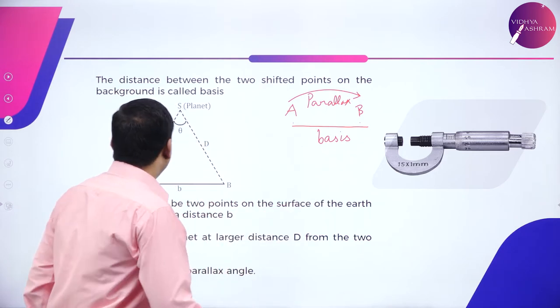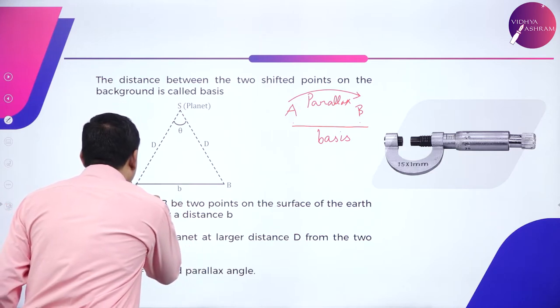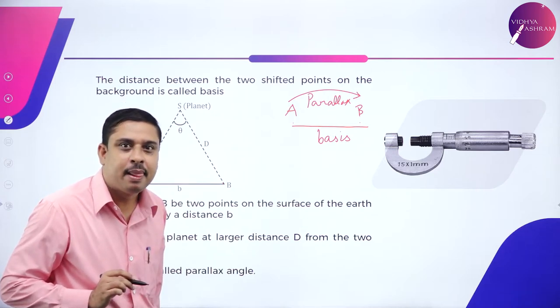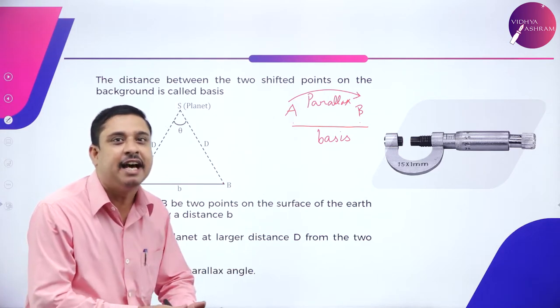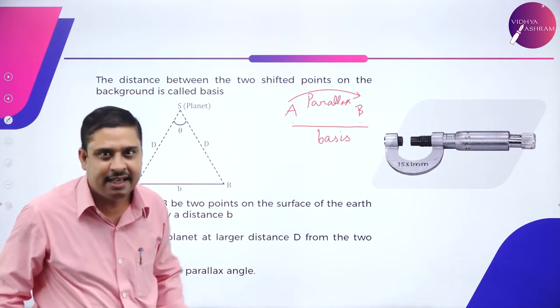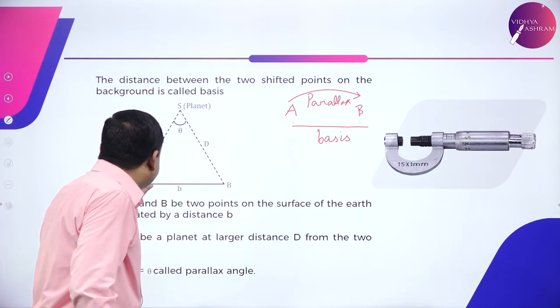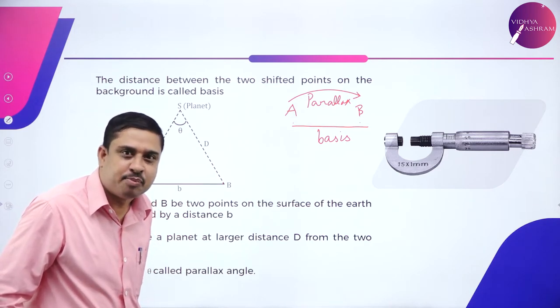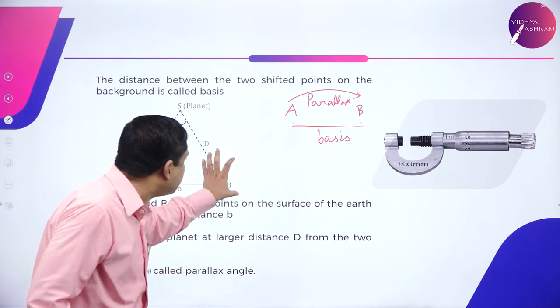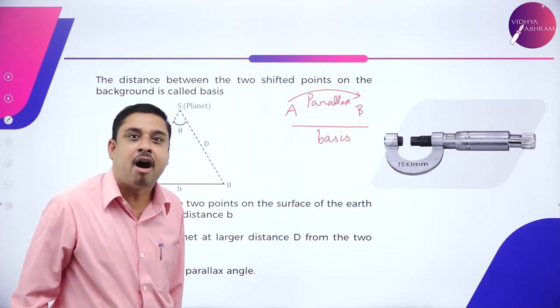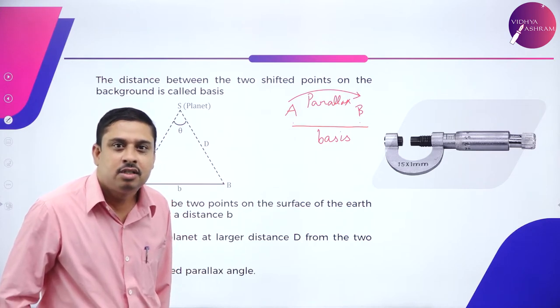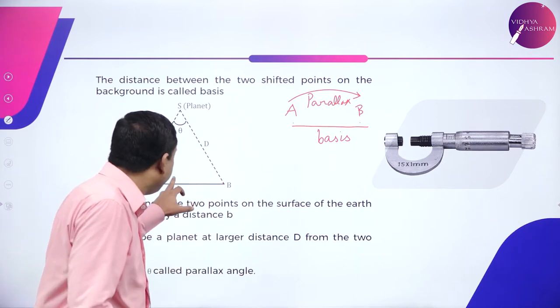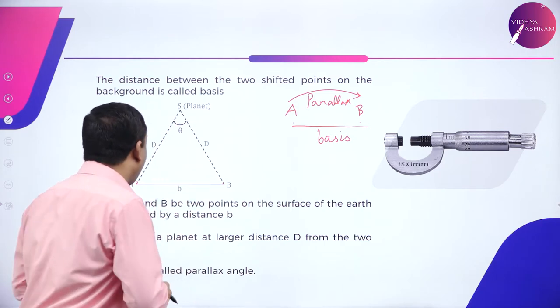Now, I will consider two points A and B on the surface of the earth. Let me consider point A is the C.V. Raman laboratory set up in India. And the point B is the NASA set up in U.S. Distance between them is small b.